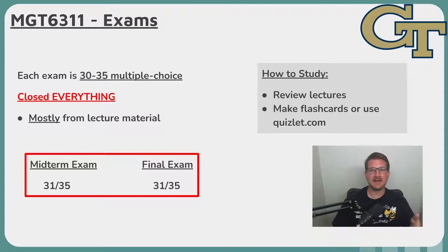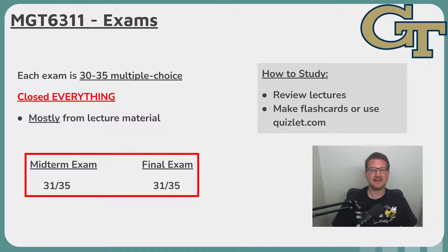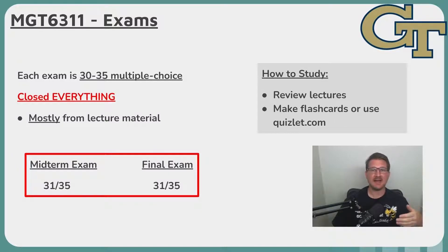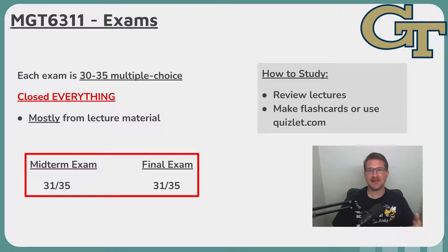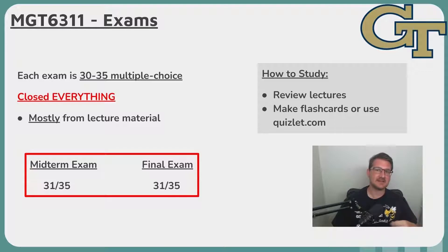For both the midterm and the final, the average score was about 31 out of 35, which is quite well. My study tips: review the lectures each week as the material comes in, then re-watch all the relevant lectures before taking the exam so it's fresh in your mind. Additionally, I found it useful to go on Quizlet and look at flashcards for both the midterm and the final. I was able to do very well on both exams using those study tips.